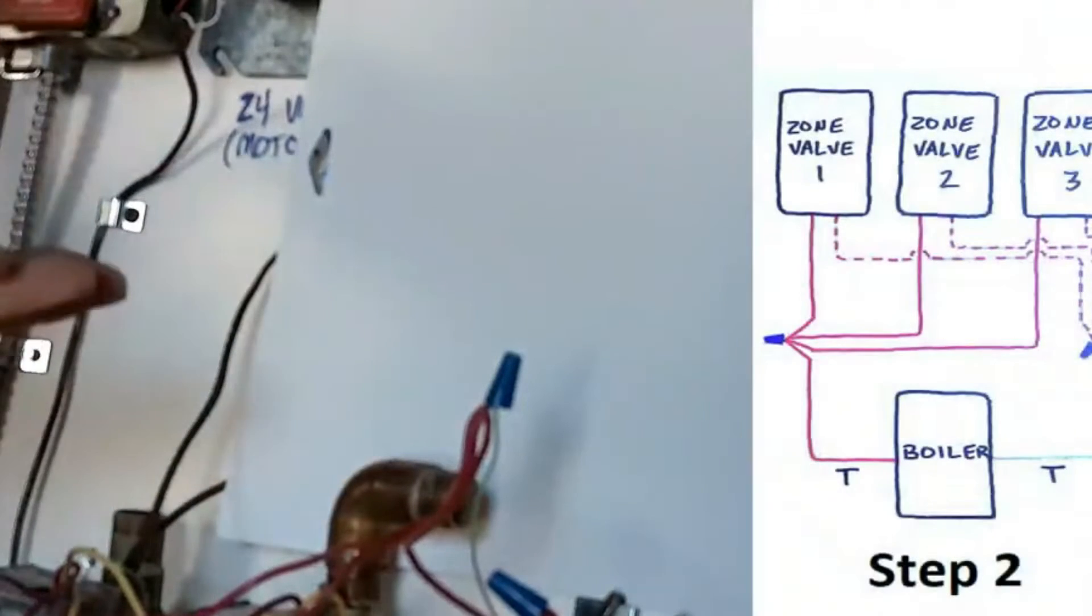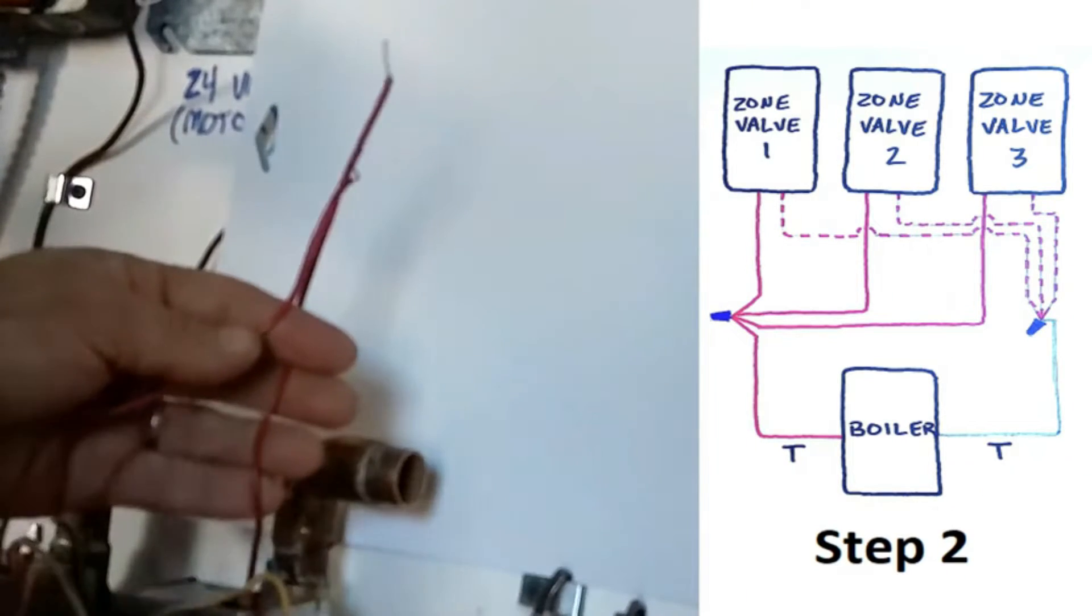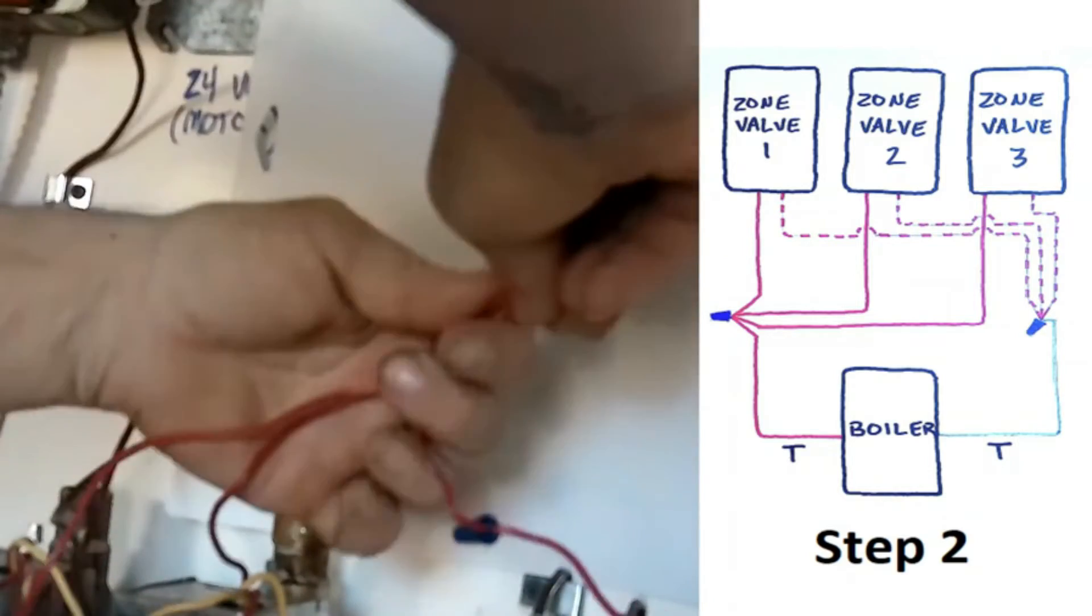Step two is exactly the same thing. You take the other red wire from each zone valve. You can move this out of the way now and we will connect it to the other TNT wire.